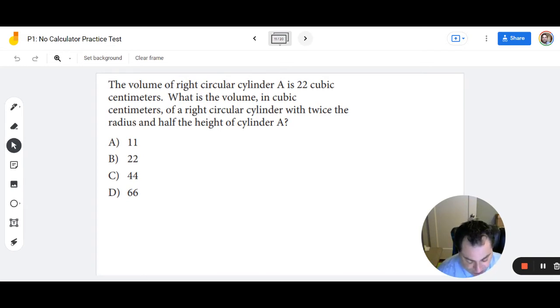All right, so the volume of a right circular cylinder A is 22 cubic centimeters. What is the volume in cubic centimeters of the right circular cylinder with twice the radius and half the height? So your best bet for this one is to just plug in numbers and see if you can figure out what's going on. So in cylinder one, why don't we make the radius equal to 2 and the height equal to 2? And now in my second cylinder, why don't we make the radius is doubled. So radius equals 4 and height equals 1 half.